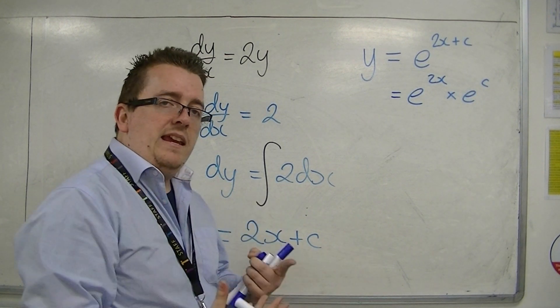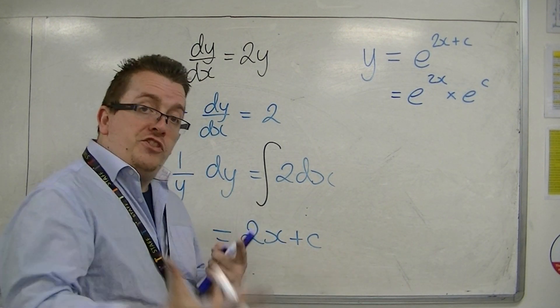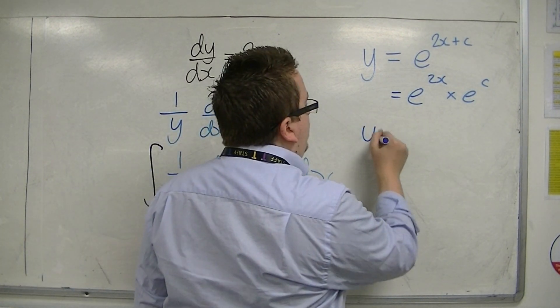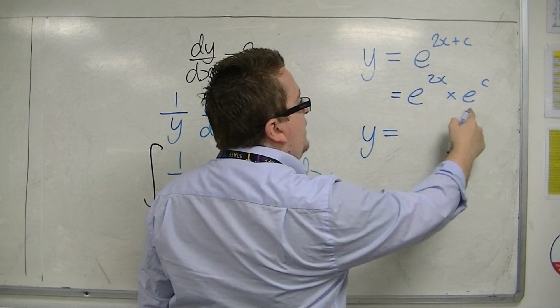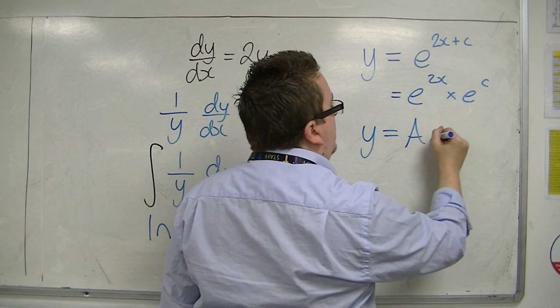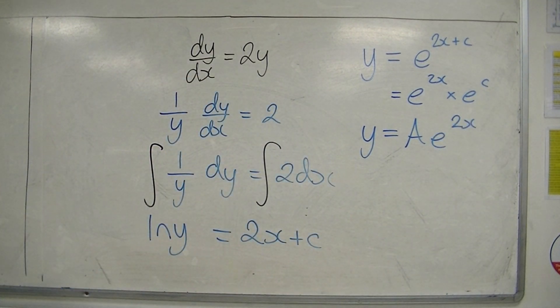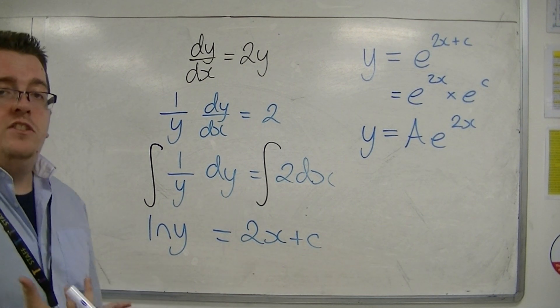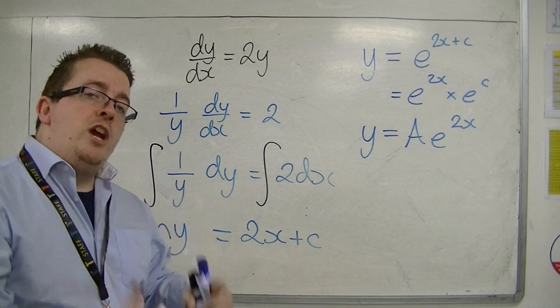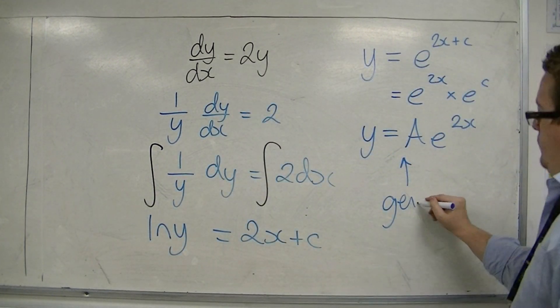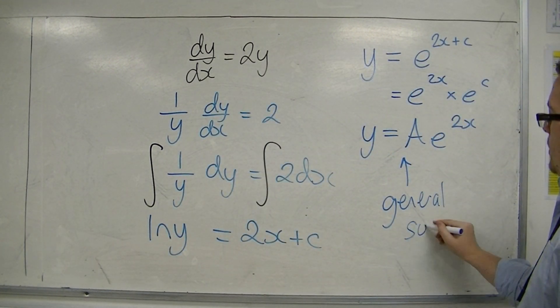Now, e to the c is just another number. It's just another constant. So I can abbreviate it by replacing e to the c with another letter. And I'm going to choose a. So y is equal to ae to the 2x. And that is known as the general solution to this differential equation.